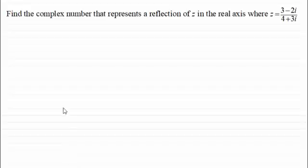So what we've got here is find the complex number that represents a reflection of the complex number z in the real axis, where z equals 3 minus 2i, all divided by 4 plus 3i.